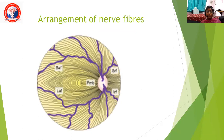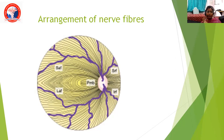Coming to the arrangement of nerve fibers: the nerve fibers are arranged in superior and inferior bundles. According to the quadrant, we call them superior arcuate fibers, inferior arcuate fibers, and superior nasal and inferior retinal fibers. The papillomacular bundle (PMB) runs from the macular area to the disc and is highly resistant to pressure changes. This arrangement is important because the visual field defects follow it.